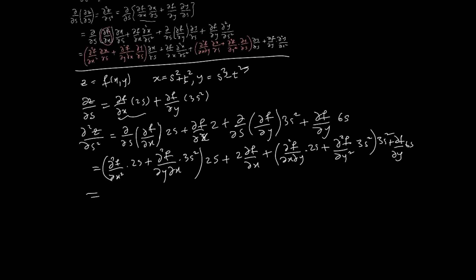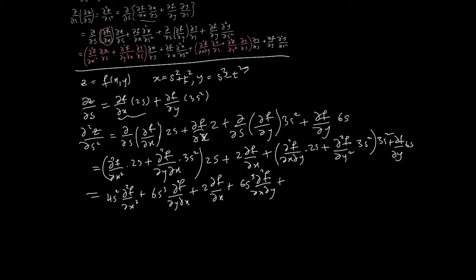Multiplying everything out: the 2s and 2s give 4s² · (∂²f/∂x²), plus 6s³ · (∂²f/∂y∂x), plus 2·(∂f/∂x), plus 6s³ · (∂²f/∂x∂y), plus 9s⁴ · (∂²f/∂y²), plus 6s · (∂f/∂y).